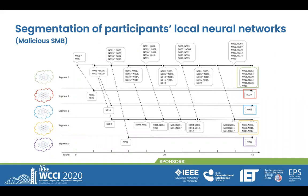So, what can we learn from this figure? We can see that after the first round, all nodes from 1 to 20 are under segment 1. And after 16 rounds of learning, there are five segments in total, with different groups of participants under each.